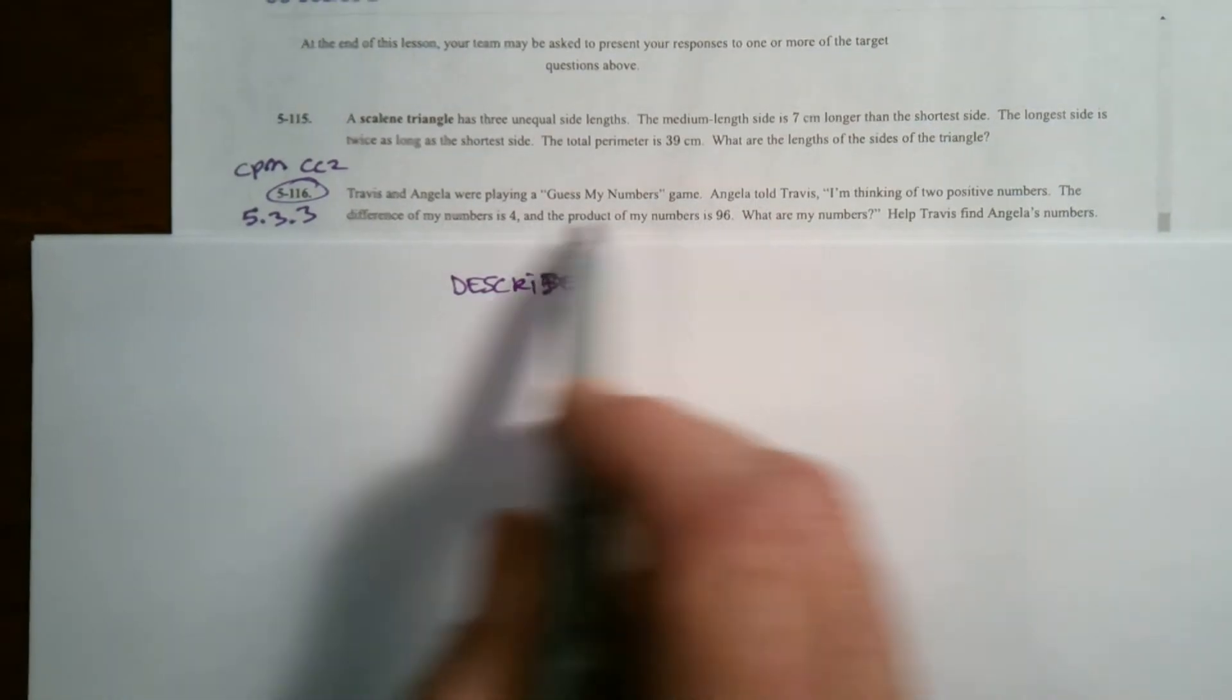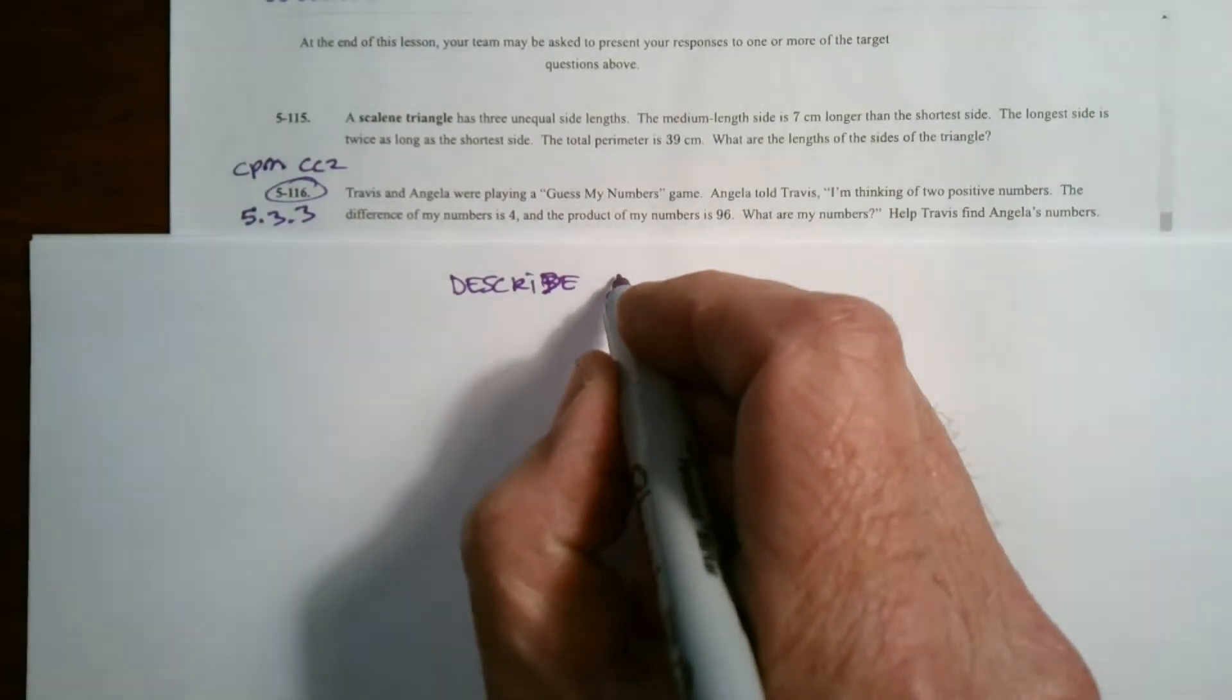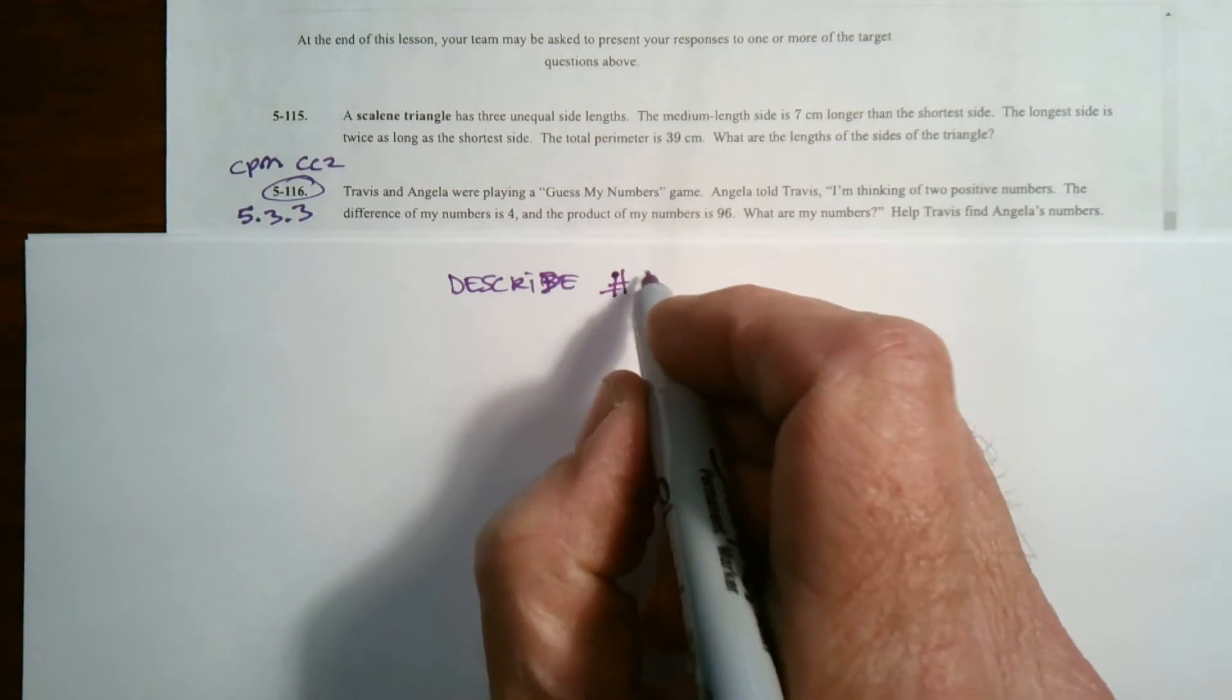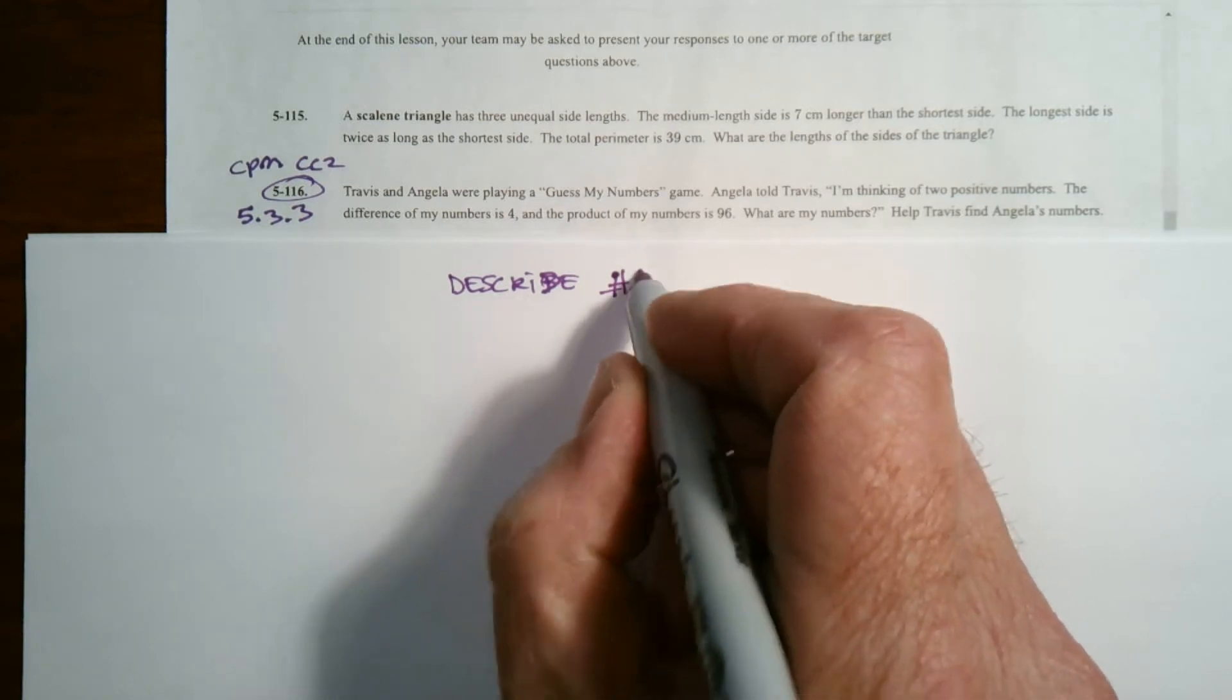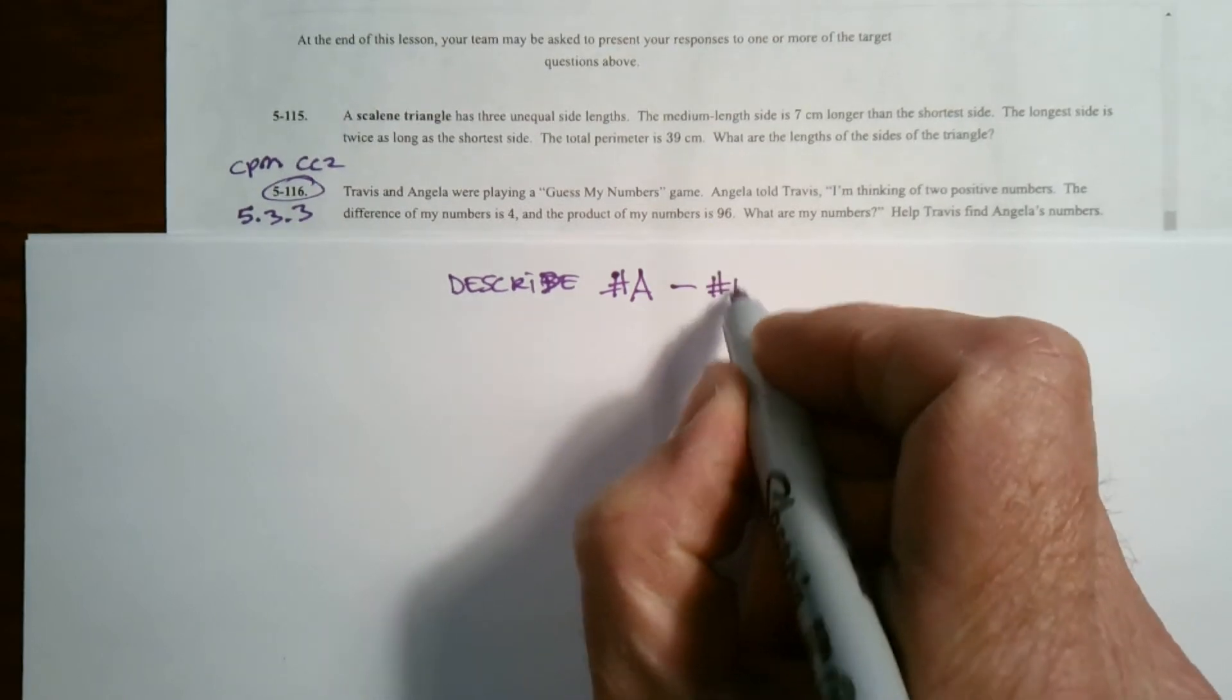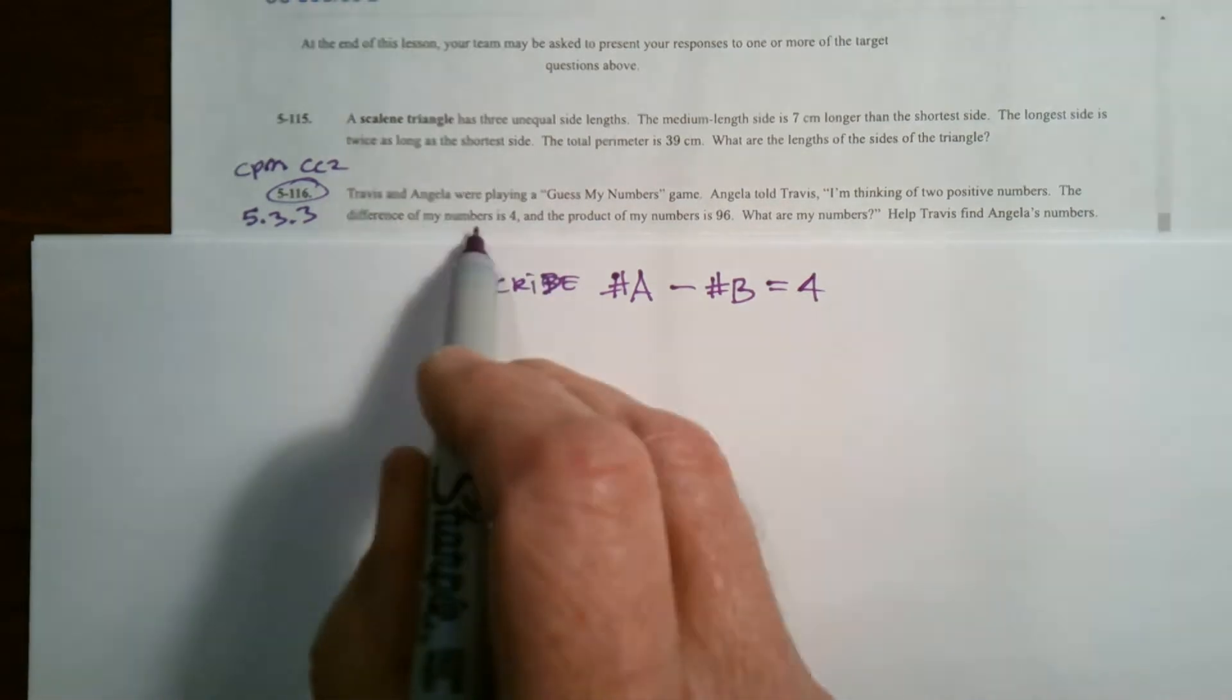So I think the main information here is the difference of the numbers is 4. So we can say we have number A and if I would subtract number A from number B, the difference would be 4. That's one of the notes that I can see there.